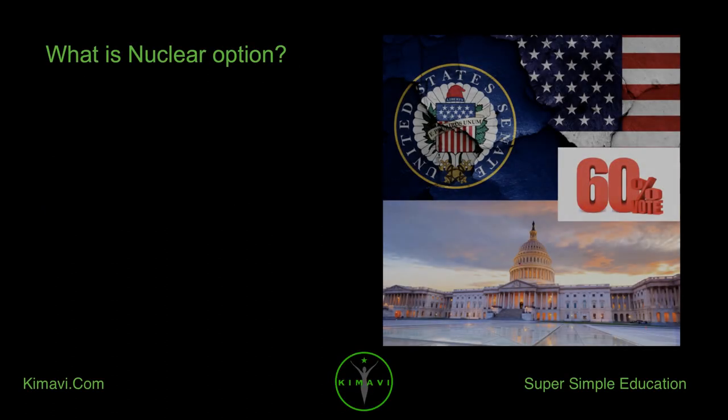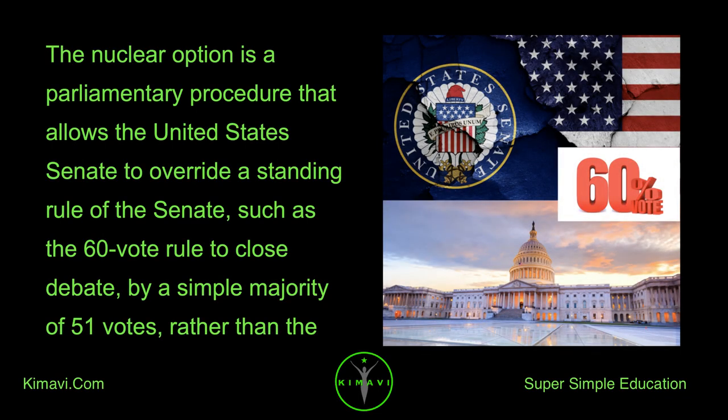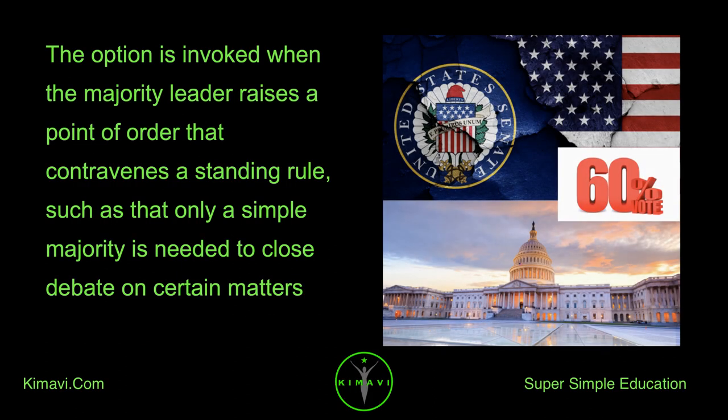The nuclear option is a parliamentary procedure that allows the United States Senate to override a standing rule of the Senate, such as the 60-vote rule to close debate, by a simple majority of 51 votes, rather than the two-thirds supermajority normally required to amend the rules. The option is invoked when the majority leader raises a point of order that contravenes a standing rule, such as that only a simple majority is needed to close debate on certain matters.